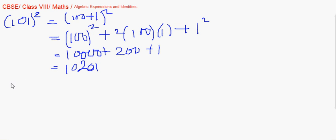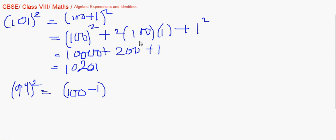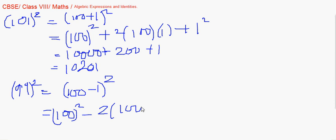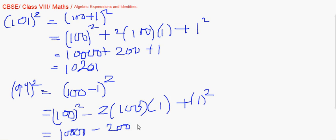Similarly for 99 squared, we think of it as (100 − 1) whole square, using Identity 2. Try to be close to hundreds or tens so you get zeros and it becomes easier to find squares. So it is 100 squared minus 2 times 100 times 1 plus 1 squared: 10000 minus 200 plus 1. That gives 9800 plus 1, so 9801 is the answer. We'll continue with more on identities and algebraic expressions in the next sessions.